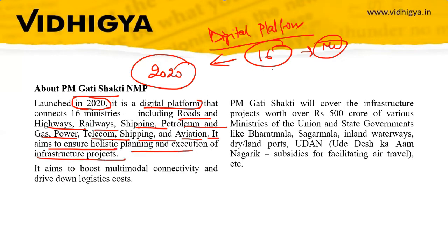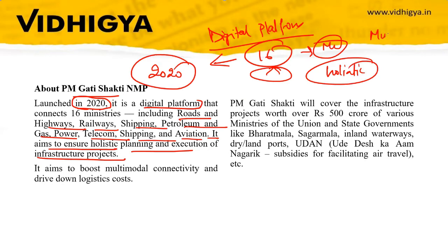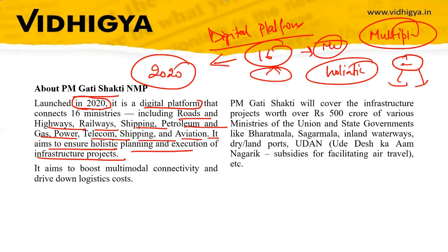The idea of bringing these 16 ministries together is to enable holistic planning, because many projects involve multiple ministries and departments. If there is one platform where the project is tracked and ministries can coordinate, then projects can be well implemented and completed on time without any extra cost.